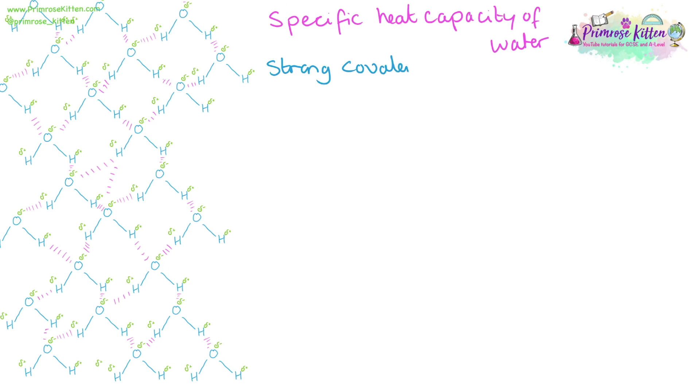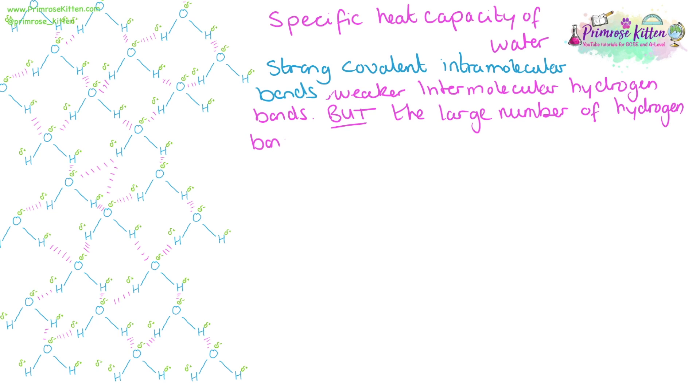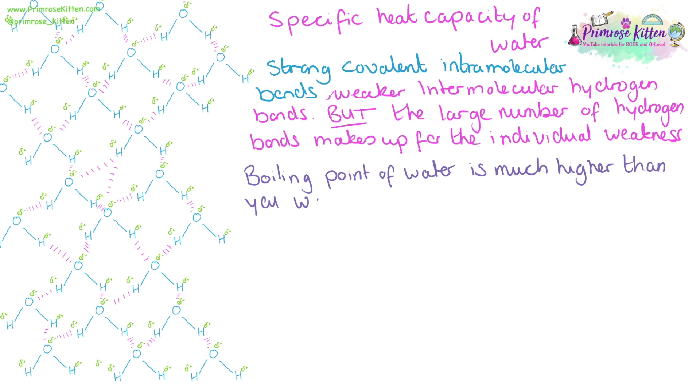Water has strong covalent intramolecular bonds and weaker intermolecular hydrogen bonds. But the large number of hydrogen bonds makes up for any individual weakness. The hydrogen bonding is responsible for the boiling point of water being much higher than you would expect for a molecule of this size.